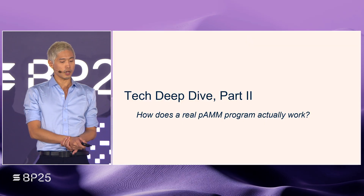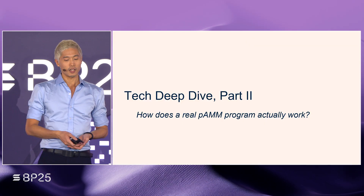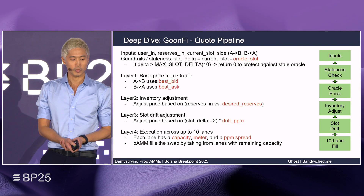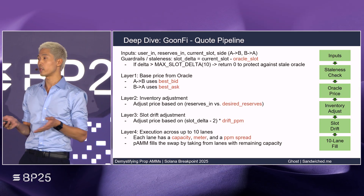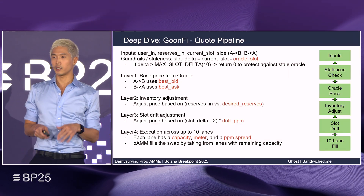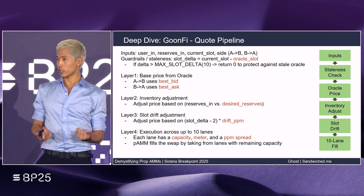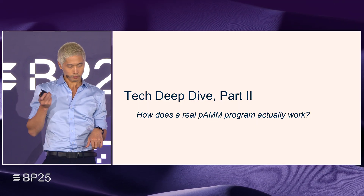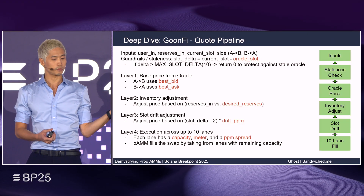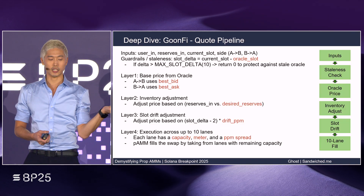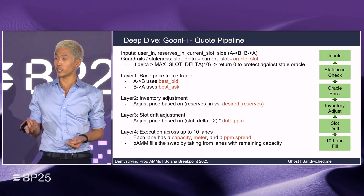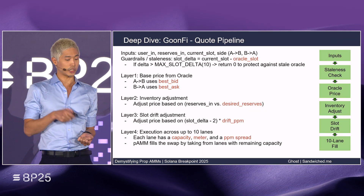Before going over the tools and techniques, let's go over one of the popular Prop AMs and how it works. You've probably heard of, or maybe even used, Orca. Let's look at how it works and think about it as an Oracle-anchored market maker with some controls. One is inventory control, which keeps reserves at a target, and flow control, which limits how much can be traded at a given price tier per slot.